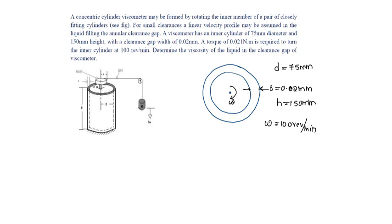One revolution will be 2π radians times 360 times π by 180 times 1 by 60, which will be 10.472 radians per second.